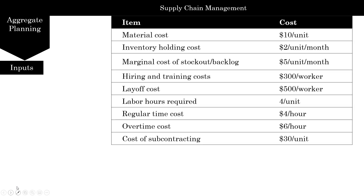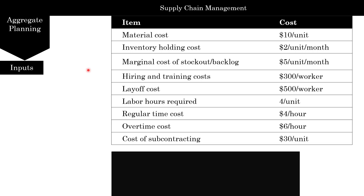Let's look at our inputs. Here are the costs: material cost is $10 per unit — remember, we calculated this using the weighted average in lecture one of aggregate planning. The inventory holding cost is $2 per unit. Marginal cost of stockout or backlog is $5. Hiring and training cost is $300 per worker. Layoff cost is $500 per worker. You need four hours per unit to make this item. Regular time cost is $4 per hour. Overtime is $6 per hour. And cost of subcontracting is about $30 per unit.